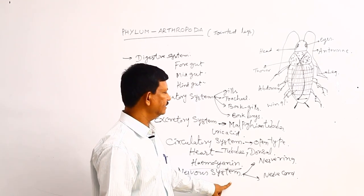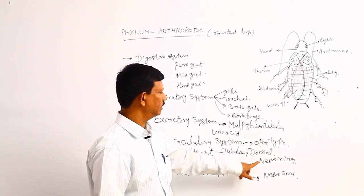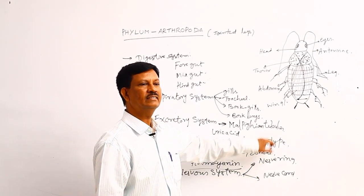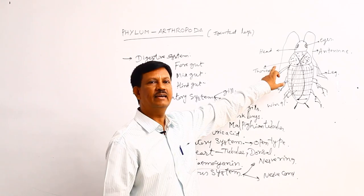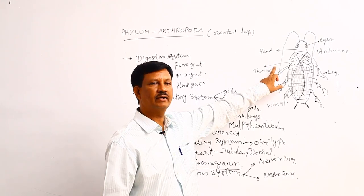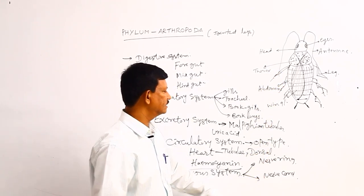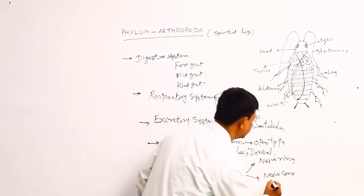The nervous system mainly consists of two parts. One is the nerve ring, which is present at the anterior end around the esophagus. The other is the nerve cord, which is a double nerve cord.